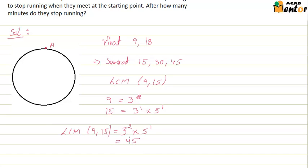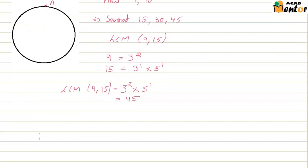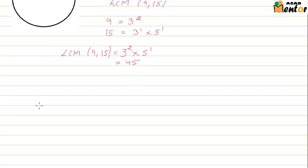So after 45 minutes, both Virat and Samrat will meet at point A, which was the starting point, and then they will stop running. So this is our answer. But in order to understand this problem clearly, let's list all the points of time when Virat will be at point A.